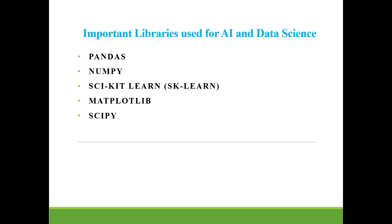In this tutorial, I am going to discuss some important libraries which are generally used for AI and data science models. Here are some libraries like pandas, numpy, scikit-learn (also known as the sklearn library), matplotlib, and scipy. These are the important libraries generally used while building machine learning and data science models.